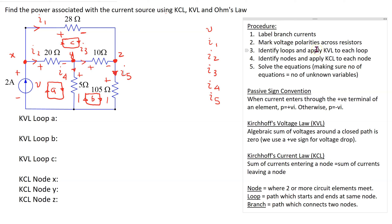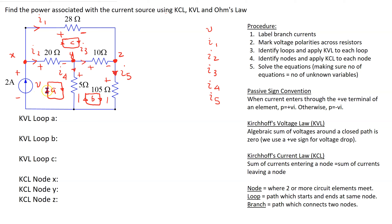Now we apply Kirchhoff's Voltage Law to each loop. Recall that KVL states that the algebraic sum of voltages around a closed path is zero, where we use a positive sign for the voltage drop. For Loop A, starting at the independent current source, going from minus to plus is a voltage rise, so we write minus V. Next, the 20-ohm resistor gives a voltage drop of plus 20·I2, and then the 5-ohm resistor gives 5·I4, equal to zero.